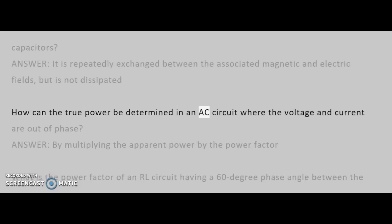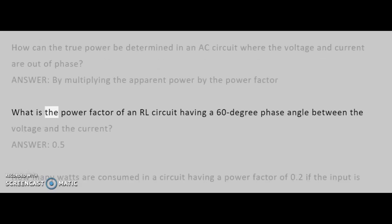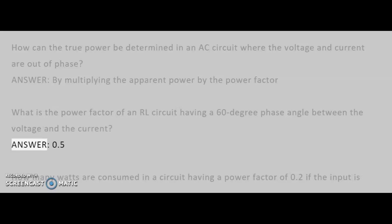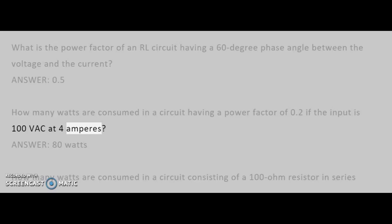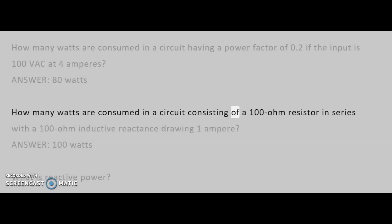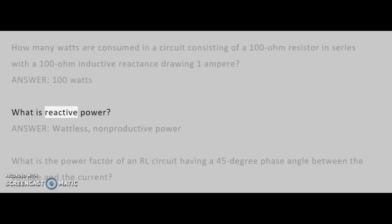How can the true power be determined in an AC circuit where the voltage and current are out of phase? Answer: By multiplying the apparent power by the power factor. What is the power factor of an RL circuit having a 60 degree phase angle between the voltage and the current? Answer: 0.5. How many watts are consumed in a circuit having a power factor of 0.2 if the input is 100 VAC at 4 amperes? Answer: 80 watts. How many watts are consumed in a circuit consisting of a 100 ohm resistor in series with a 100 ohm inductive reactance drawing 1 ampere? Answer: 100 watts. What is reactive power? Answer: Wattless, non-productive power.